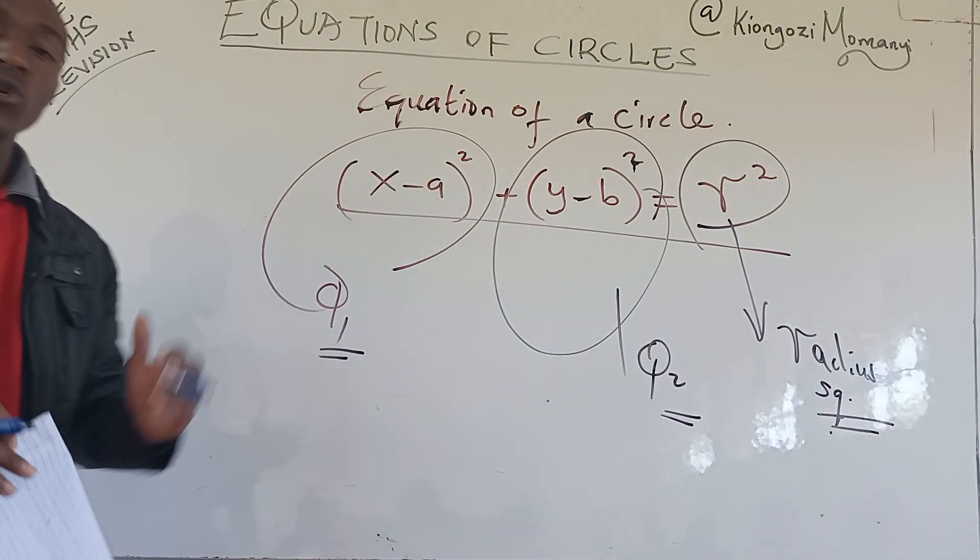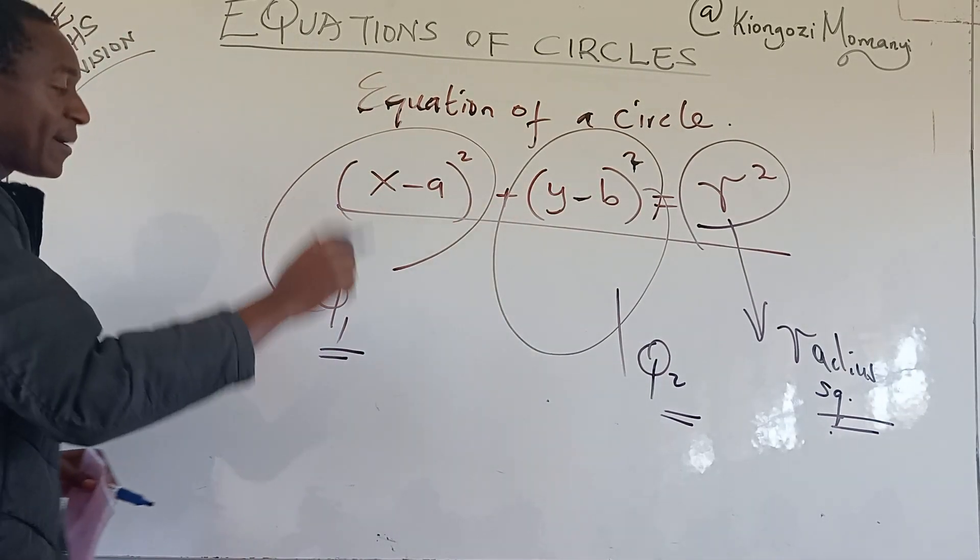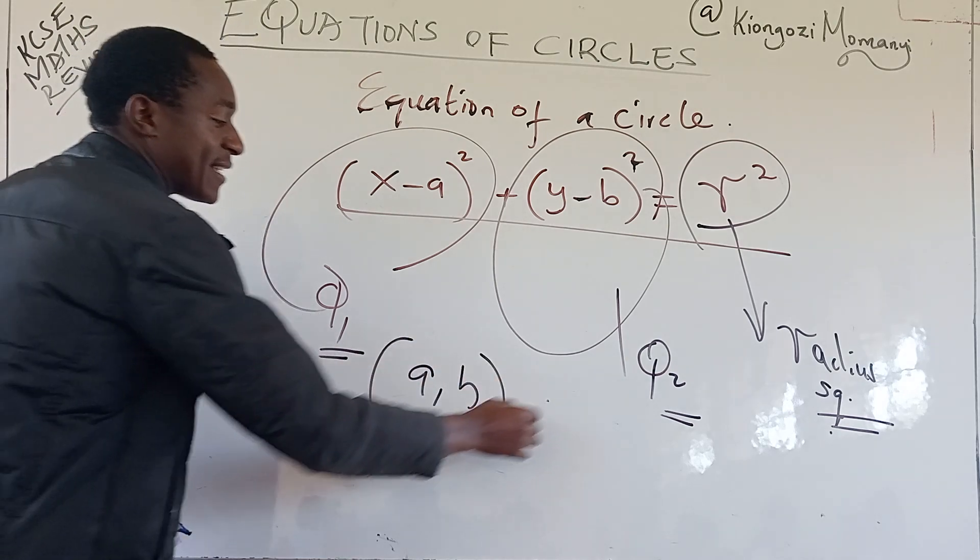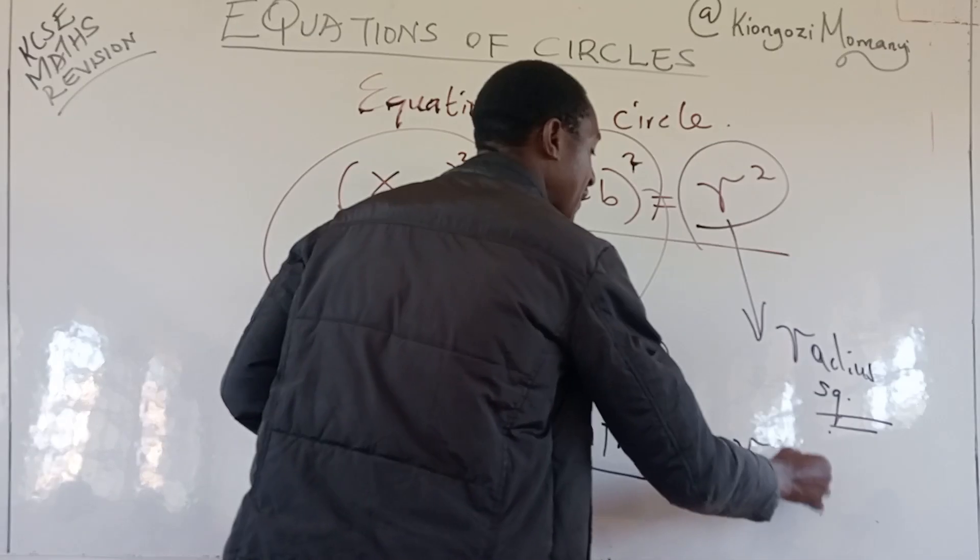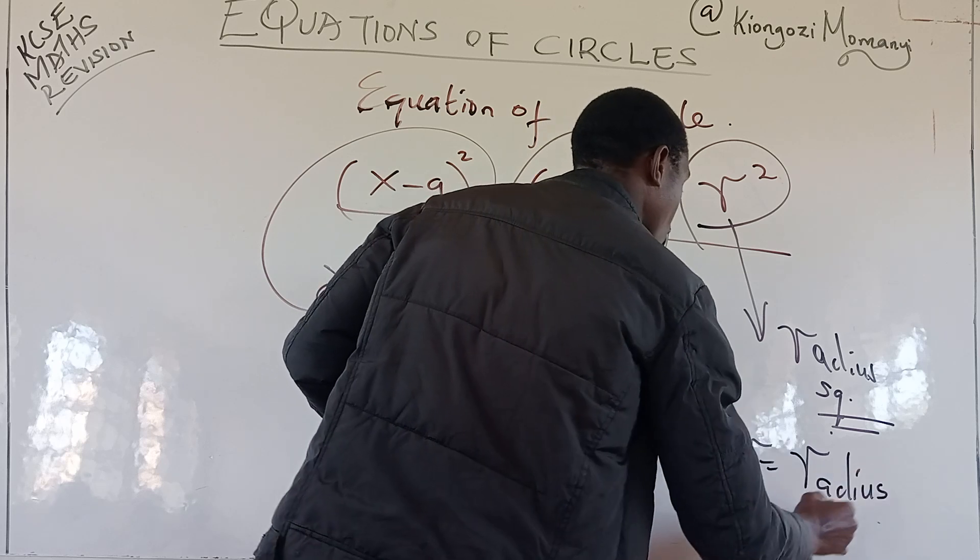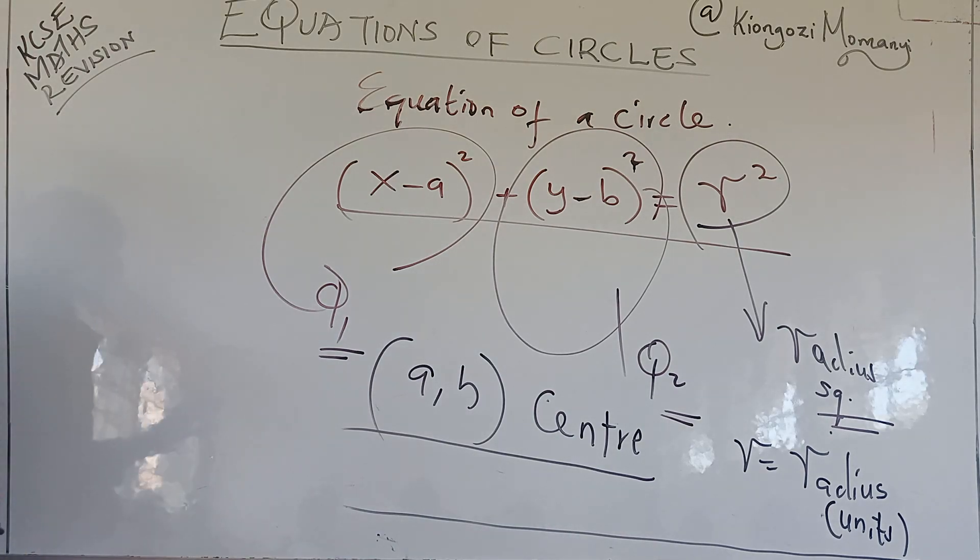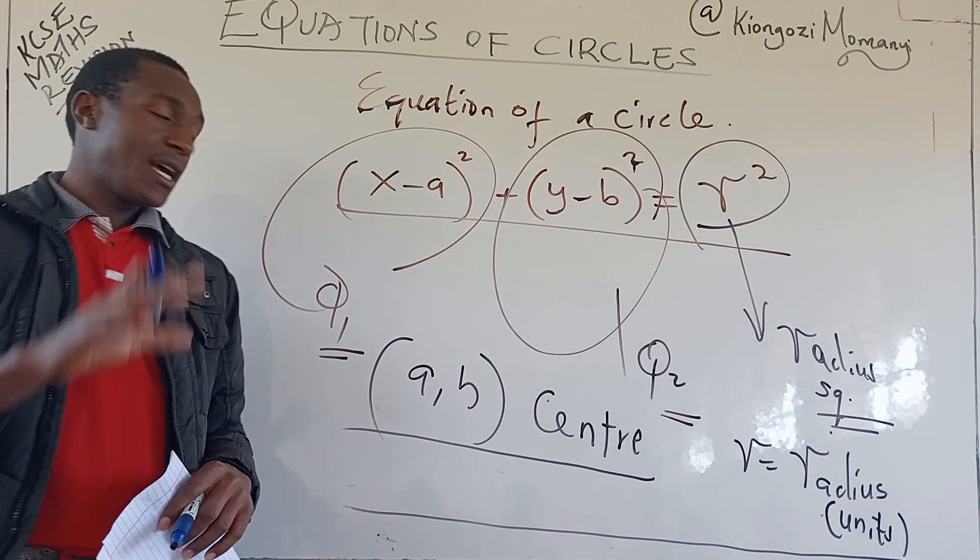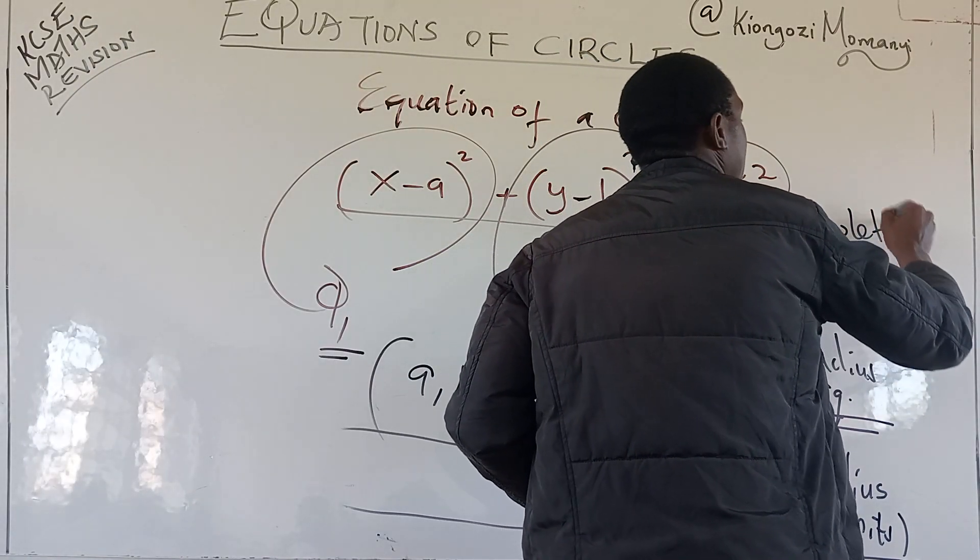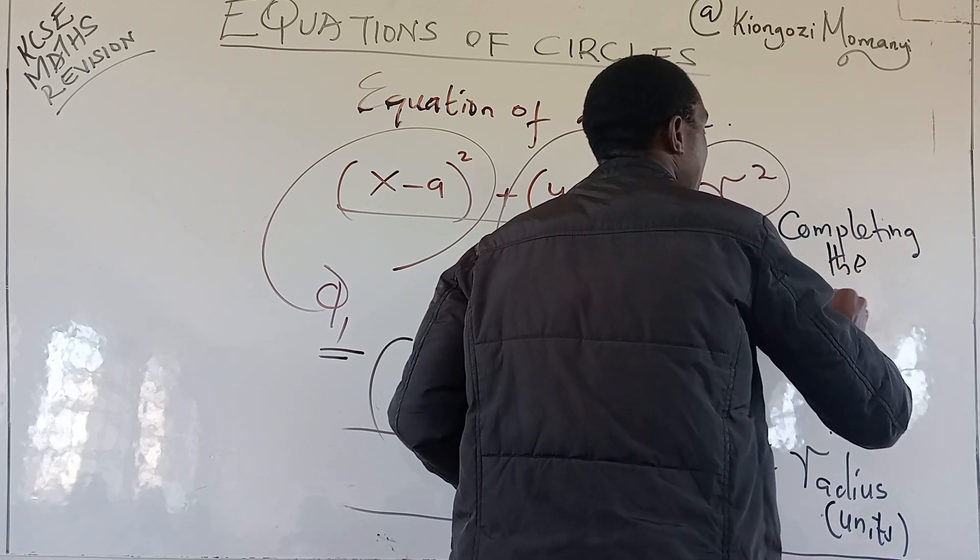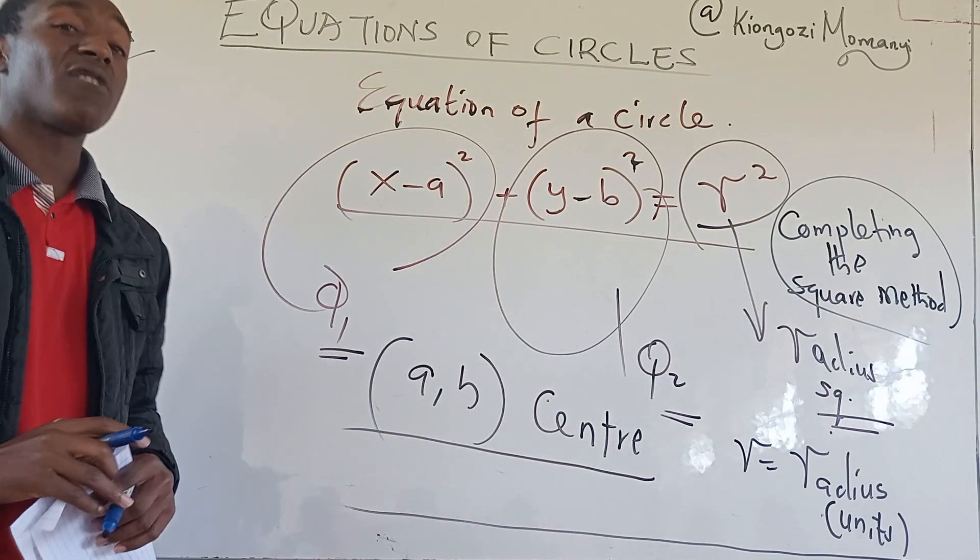So we shall apply some concepts in trying to understand how a, b, and r comes into play. Remember, (a, b) is the center of that circle. And as I've said, r stands for the radius of that circle in units. So these are the crucial things I want you to understand.